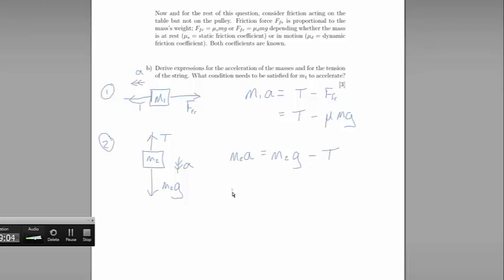So put equation 1 in terms of T, we get T equals M1A plus mu M1G. It should be M1 there and M1 there, so we're clear about which mass we're talking about, which we can simplify to M1 multiplied by A plus mu G.